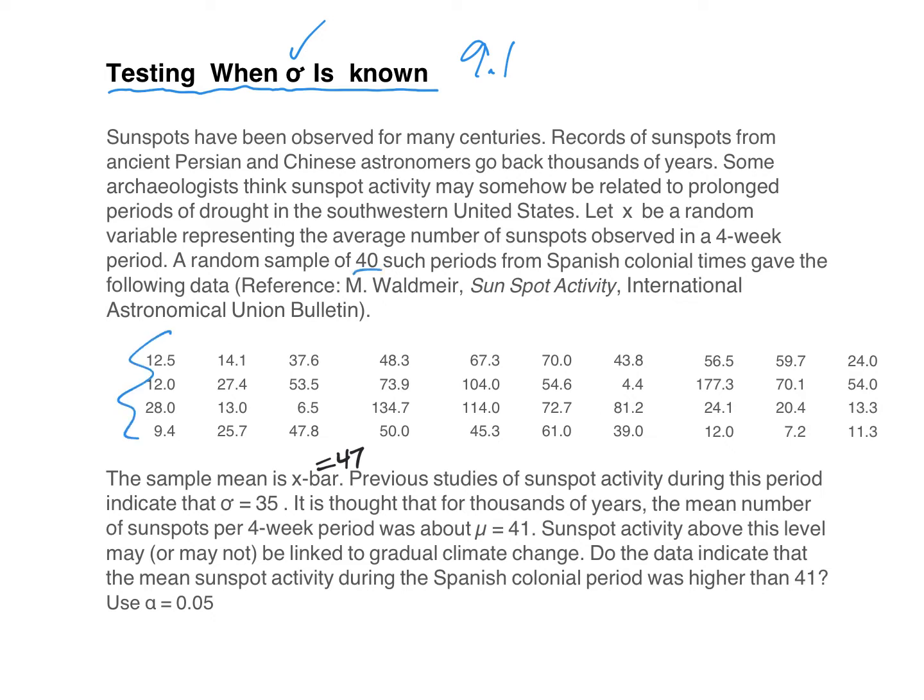There's going to be a bunch of them. In fact, 40 of them. So as we go, and I read this, I'll underline the important pieces that you need. Sunspots have been observed for many centuries. Records of sunspots from ancient Persian and Chinese astronomers go back thousands of years. Some archaeologists think sunspot activity may somehow be related to prolonged periods of drought in the southwestern United States.